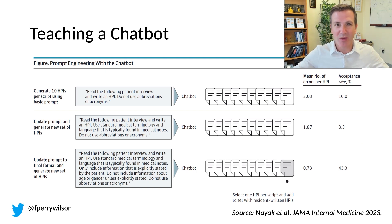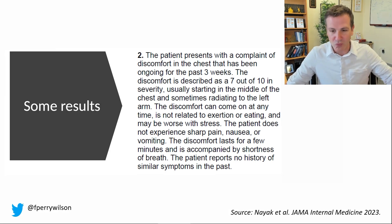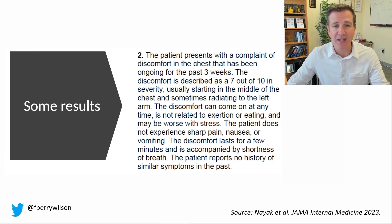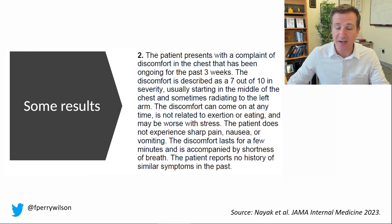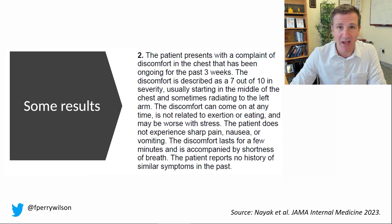They mixed the AI-written HPI in with a bunch of resident-written ones and asked senior attendings if they could tell the difference. Here's an example of an AI-written history of present illness from that chest pain patient: 'The patient presents with a complaint of discomfort in the chest that has been ongoing for the past three weeks. The discomfort is described as a seven out of ten in severity, usually starting in the middle of the chest, sometimes radiating to the left arm. The discomfort can come on anytime, it's not related to exertion or eating and may be worse with stress. The patient does not experience sharp pain, nausea, or vomiting. The discomfort lasts for a few minutes and is accompanied by shortness of breath. The patient reports no history of similar symptoms in the past.' If you saw this in a medical record, I probably wouldn't immediately think that an AI wrote it. Seems perfectly reasonable.